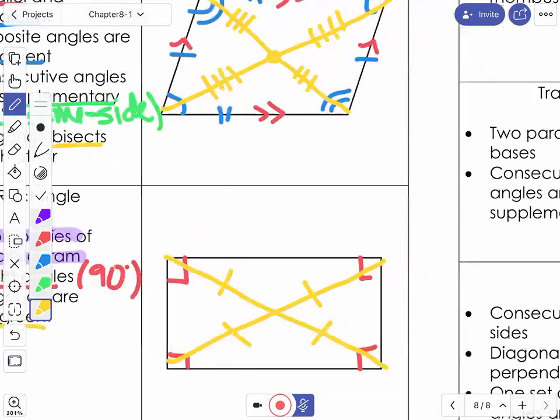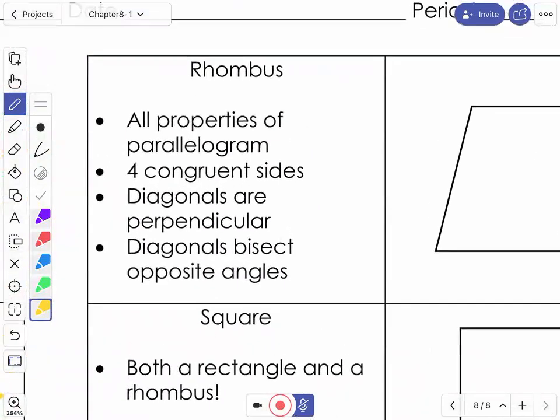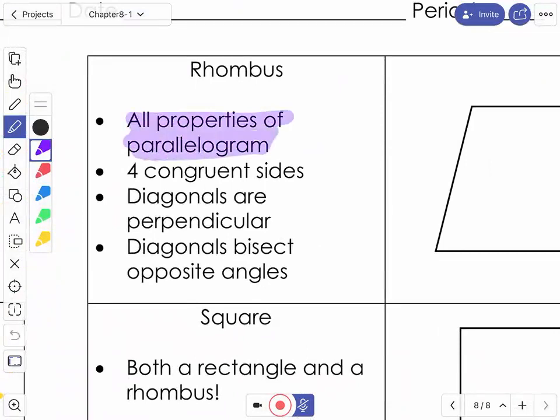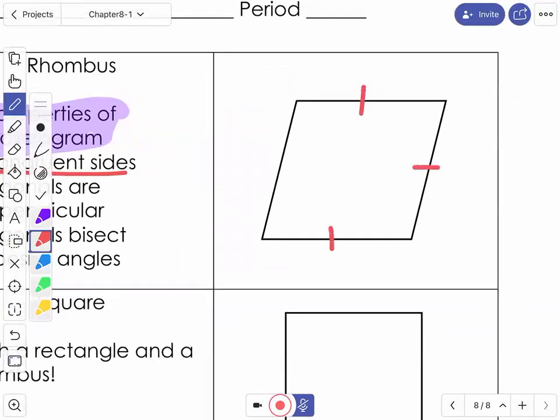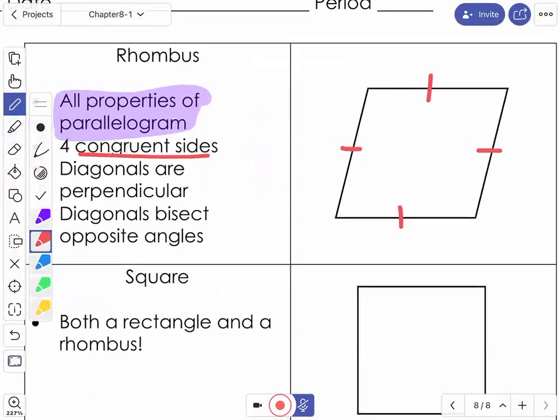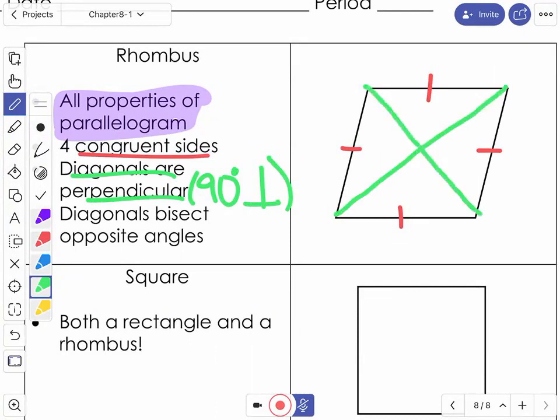Next, after rectangle, we looked at another family group of parallelograms, the rhombus. And again, it's got all properties of parallelogram, so I'm not going to redraw all of those parallelogram properties. This time it's got four congruent sides. So all four sides are exactly the same. Our diagonals are perpendicular. Remember, perpendicular means make 90. That's the upside down T shape.